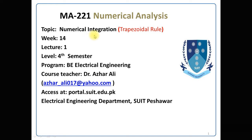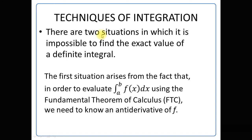In numerical integration, we will discuss approximate integration of a regular shape by using the trapezoidal rule. What are the techniques of integration? There are two situations in which it is impossible to find the exact value of a definite integral. The first situation arises from the fact that in order to evaluate the definite integration from a to b of the function f(x) with respect to x using the fundamental theorem of calculus, we need to know an anti-derivative of the function f.